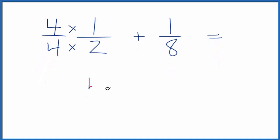Let's do that. Four times one is four. Four times two is eight. So four-eighths plus one-eighth, and four-eighths that's just one-half but now we have the denominator the same.